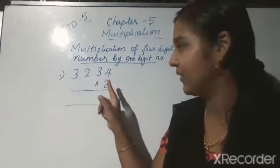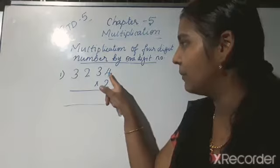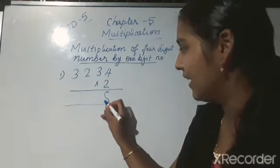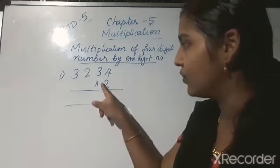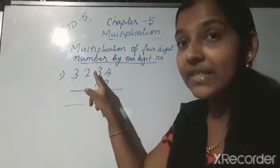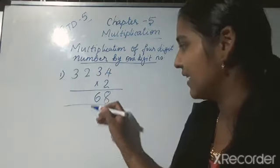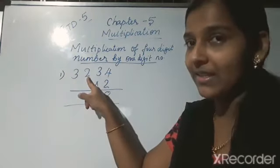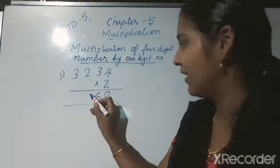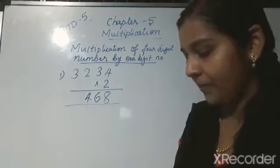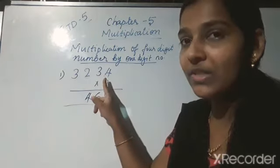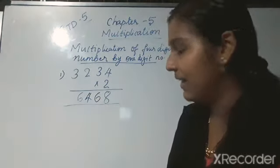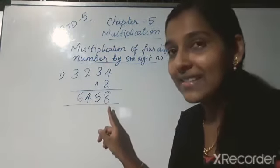We know the table of 2. First, we have to say the table of 2 up to 4. That is, 2 fours are 8, so you can write 8 here. Now, say the table of 2 up to 3 — 2 threes are 6, write 6 here. Then 2 into 2 — 2 twos are 4, write 4 here. And then 2 into 3 — 2 threes are 6, write 6 here. So we got the answer 6,468.